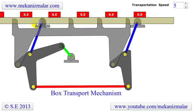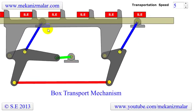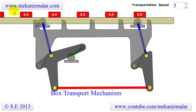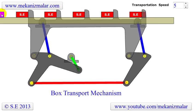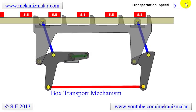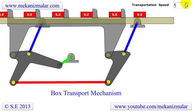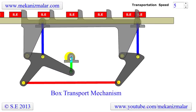Once these operations are completed, the box is pushed into a shipping conveyor system. The speed of the operation can be controlled by adjusting the speed of the motor powering the crank, shown here.